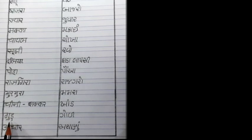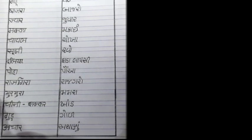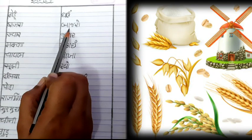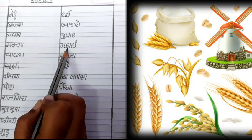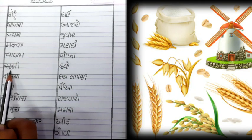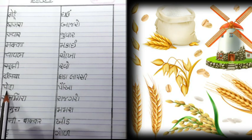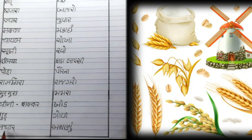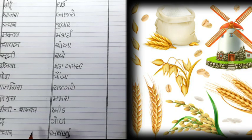ત્યાર પછી 'અચાર' - 'અથાણું'. આ ત્રણ શબ્દો અનાજ નથી, પણ આ વસ્તુઓ છે, જેનો ઉપયોગ આપણે રોજ કરીએ છીએ. ફરીથી વાંચી લઈએ: ગેહૂ-ઘઉં, બાજરા-બાજરો, જવાર-જુવાર, મકા-મકાઈ, ચાવલ-ચોખા, સૂજી-રવો, દલિયા-ફાડા લાપ્સી, પોહા-પૌઆ, રાજગીરા-રાજગરો, મૂર મૂરા-મમરા, ચીની/શકર-ખાંડ, ગૂળ-ગોળ, અચ્ચા-અથાણું.